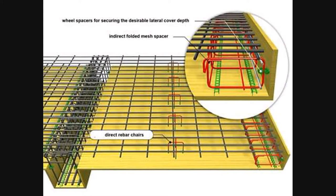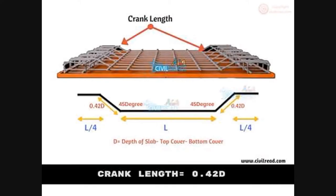D — now we are going to calculate 0.42 D. For a 10mm bar, this comes to approximately 90mm, which is approximately 4 inches. That is the crank length.